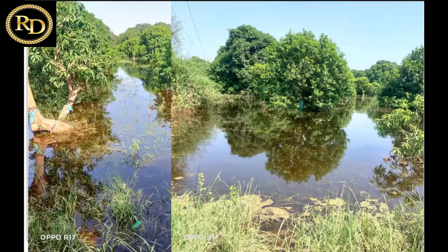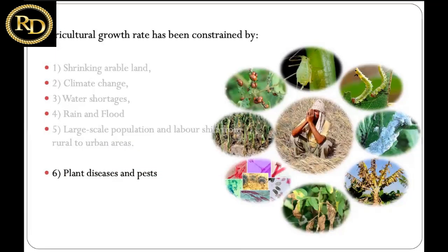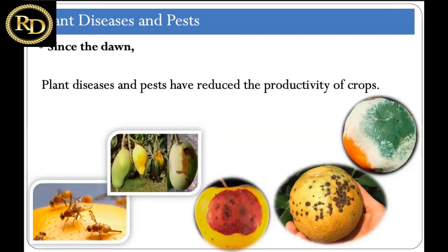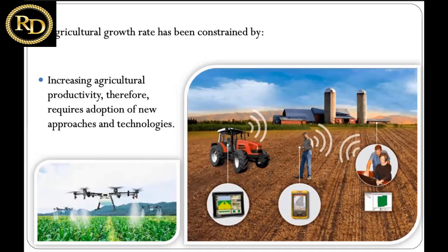Another challenge is that large populations and labor are shifting from rural to urban areas — people living in rural areas are moving and changing their professions, which means we will face a shortage of labor force in rural areas in the future. Plant diseases and pests remain a big challenge for productivity. According to estimates from the United Nations Food and Agriculture Organization, around 40 percent of annual losses are caused by insect pests, weeds, and different diseases. To increase agriculture productivity, we need the adaptation of new approaches and technology.